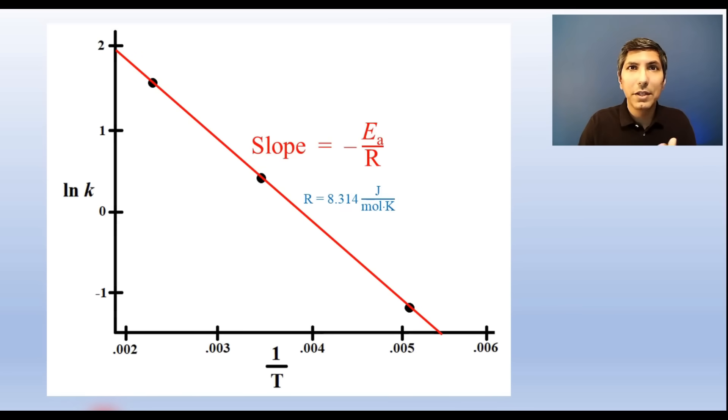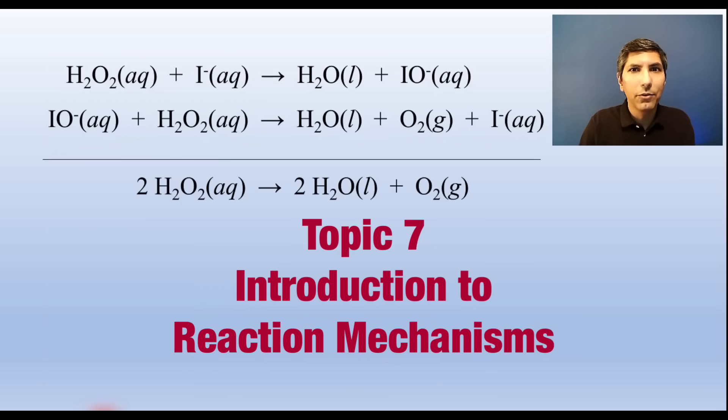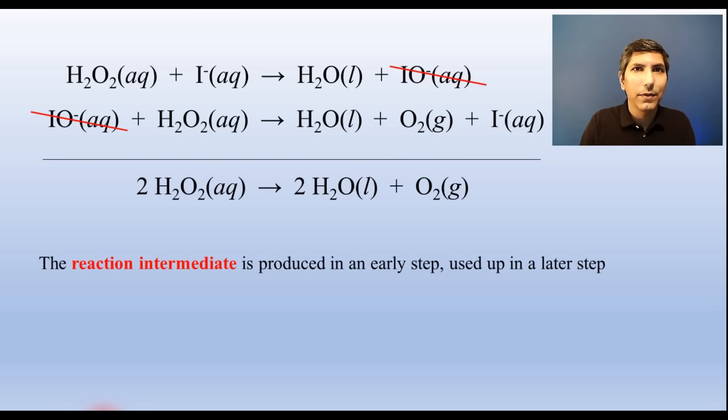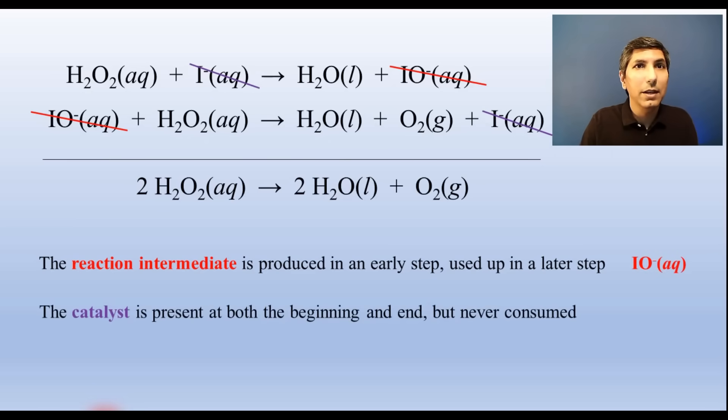Back to multi-step reactions, notice that the individual steps add up to the overall balanced equation. In this mechanism, we have a temporary molecule created in the early step that gets used up in the later step. That's called a reaction intermediate. And sometimes we see molecules present at the beginning of a process and also at the end. It participates in the reaction, but it never gets consumed. We call that a catalyst. If we want to build evidence that this is the actual mechanism for the reaction, then we should look for evidence of this IO negative ion popping up somewhere when we do our chemical analysis.